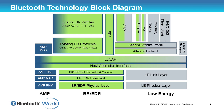Above that we have what would traditionally be called a MAC — a medium access controller. In BR-EDR we have a baseband and the link controller and manager, whereas in Low Energy we just have a very simple link layer.